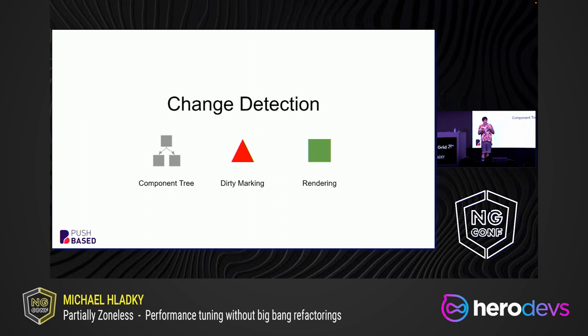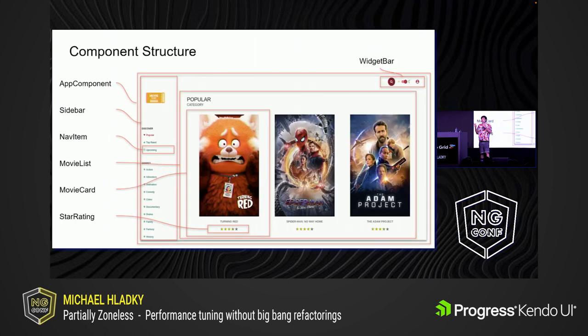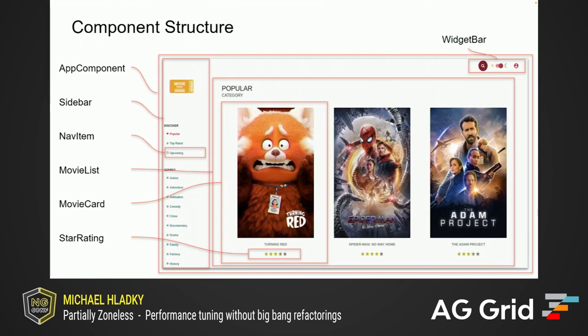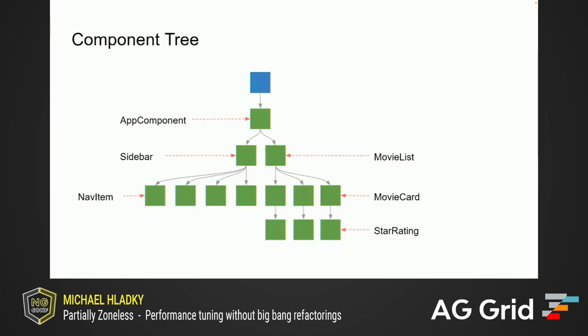Change detection in this slide deck is divided into the topics: component tree, dirty marking, and rendering. Let's start with the component tree. Your Angular application consists of different components. Here I marked all the components with a red box. And if you take this structure and look at how Angular treats it, it is a tree structure. At the very top, this blue box is the application reference that holds all the components of this tree.